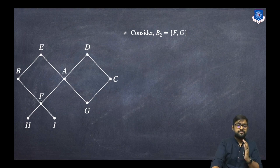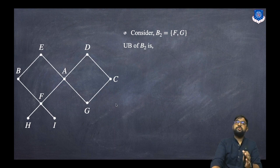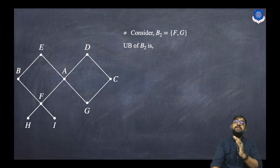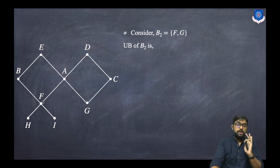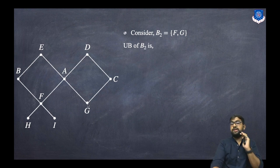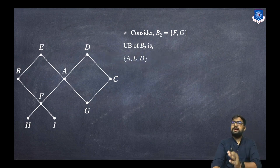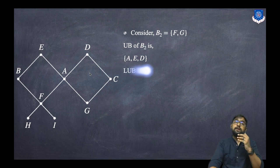For B2 = {f, g}, we first find the upper bounds and then the Least Upper Bound. For upper bounds there has to be a relation from the given set to the upper points. There are many upper points: b, e, a, d, c. Can we go from f to b? Yes. Can we go from g to b? No. So b cannot be an upper bound. By symmetry, c cannot be an upper bound either. What's left are e, a, and d. Can we go from f to a and g to a? Yes. Can we go from f to e and g to e? Yes. And similarly for d. So the upper bounds are a, e, and d.